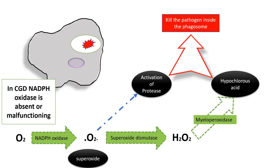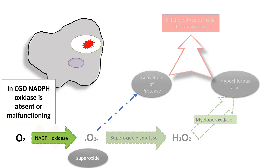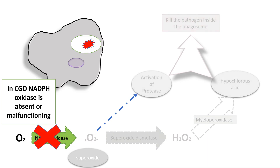In chronic granulomatous disease, NADPH oxidase is absent or malfunctioning. As a result, the whole oxidative burst is absent, leading to the inability of phagocytes to clear the pathogen.